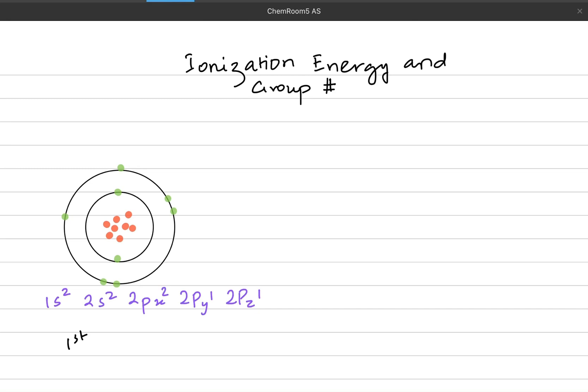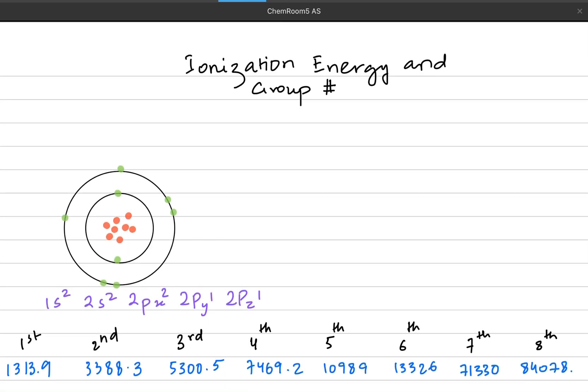Now I'm going to give you the values of the ionization energy. First ionization is 1313.9, second is 3388, third is 5300, fourth is 7469, fifth is almost 10,900, seventh is 71,330, and then eighth is 84,078.